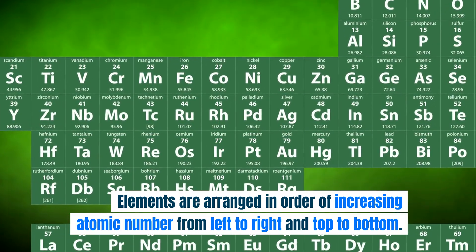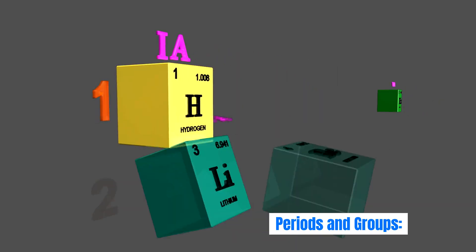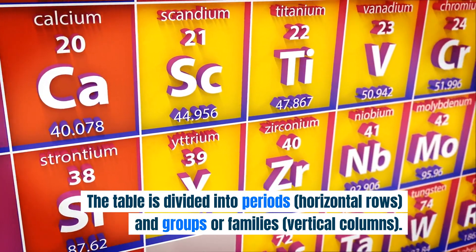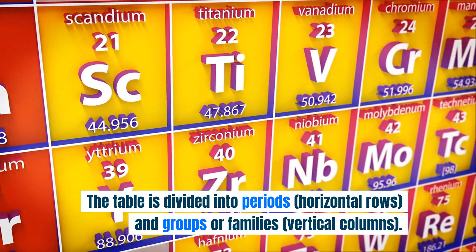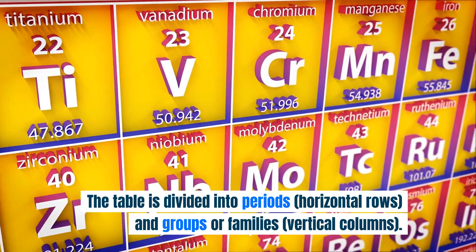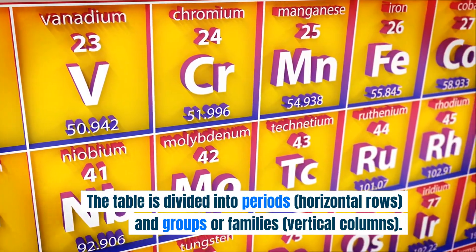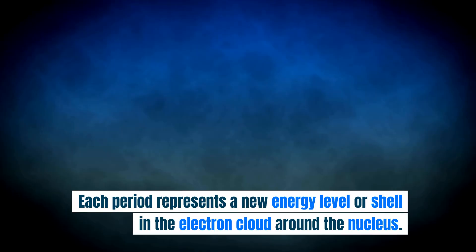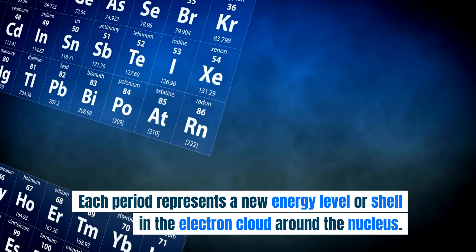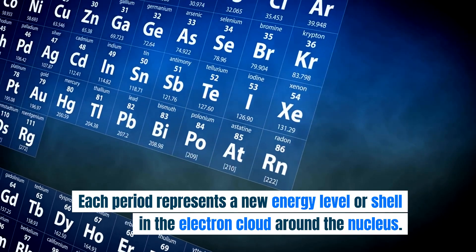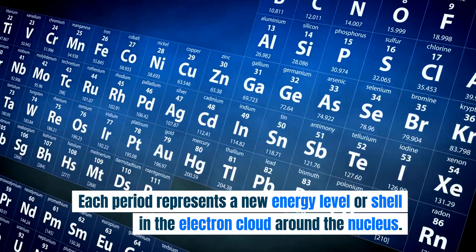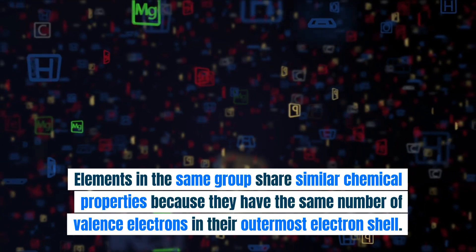Periods and groups: the table is divided into periods — horizontal rows — and groups or families — vertical columns. Each period represents a new energy level or shell in the electron cloud around the nucleus.